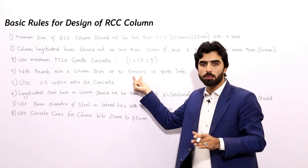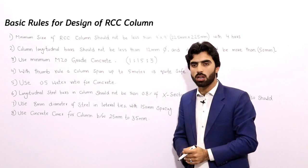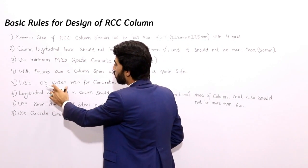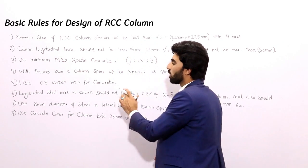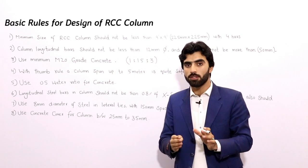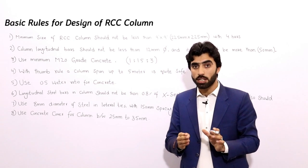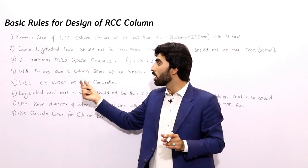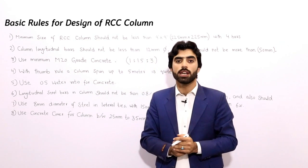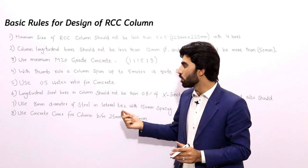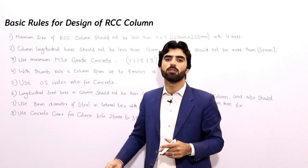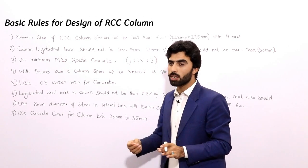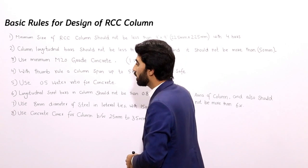The fifth rule: use a water-cement ratio of 0.5 for concrete. Since we are using M20 grade concrete for RCC columns, take 0.5 as the water-cement ratio for M20 grade concrete.